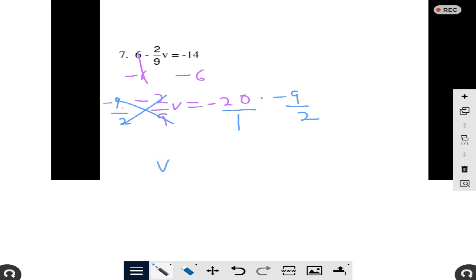I know that V equals to negative 20 times negative 9, that's going to be 180, 180 divided by 2, that I can do without a calculator, that's going to be 90, and that's your answer, V equals to 90.